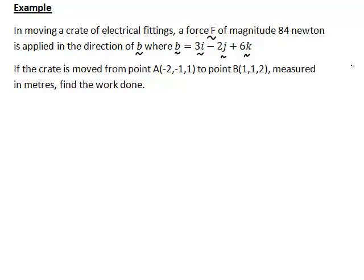If the crate is moved from a point A with coordinates (-2, -1, 1) to a point B with coordinates (1, 1, 2) in 3D space, measured in metres, find the work done. So first of all, the force is in newtons, the distance displacement is in metres, so therefore work done will be in joules.